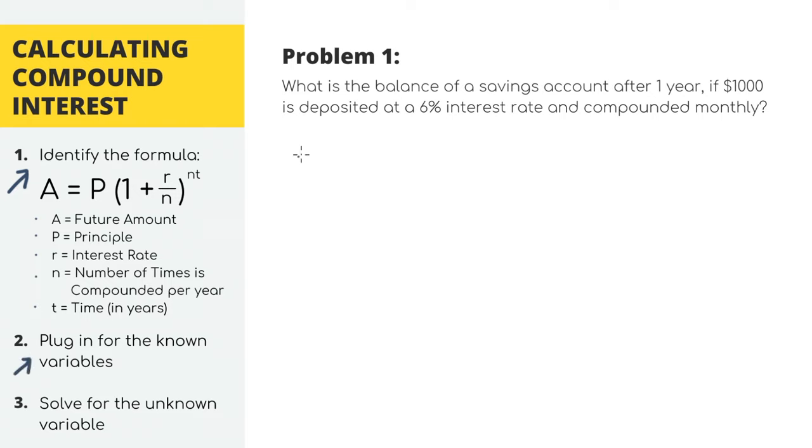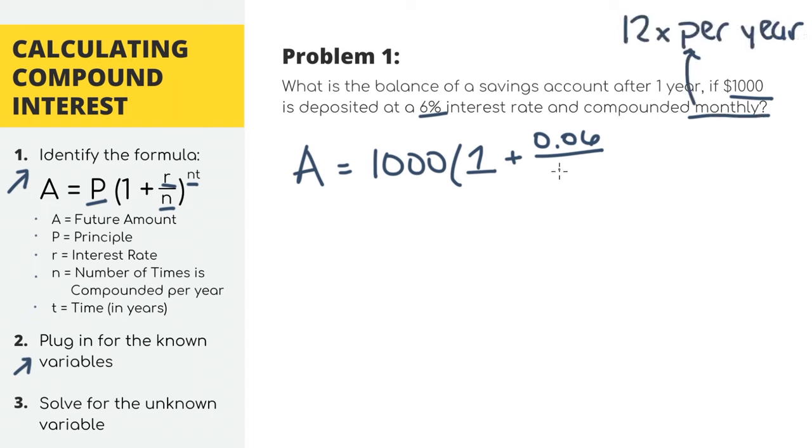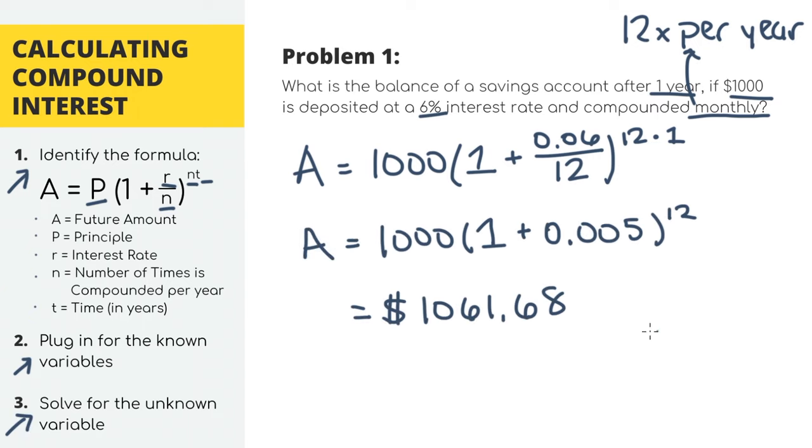And plugging in all the numbers, we're solving for A, P equals 1000, R equals 0.06, N equals 12 because it's compounded monthly and there are 12 months in a year. And T is the time the money is in the account which is one year. We'll get our answer $1,061.68. That means we'll have $1,061.68 in our bank account after one year which is great, more money.